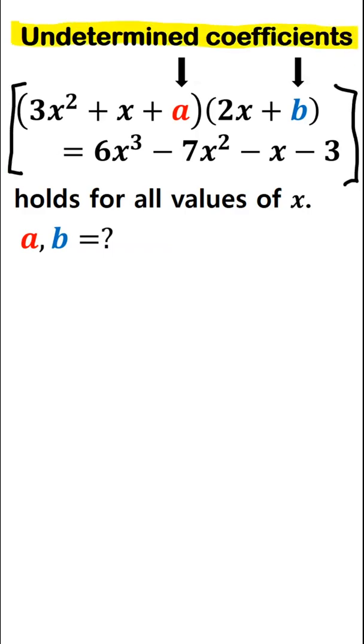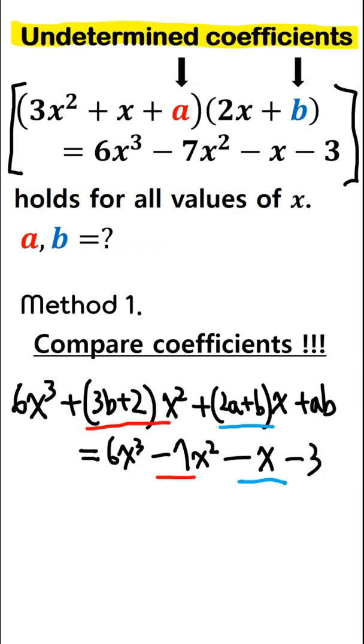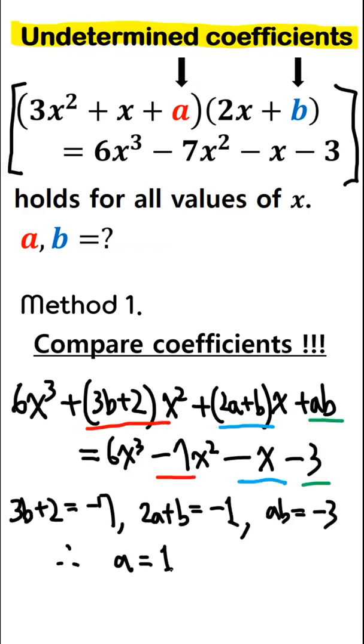Here, the most common method of determining a and b is to compare coefficients. That is, we simply expand the left-hand side in descending powers of x, and simply compare the coefficients of the terms of the same degree.